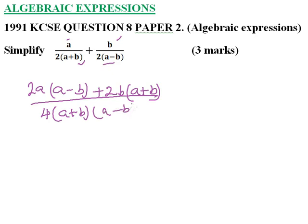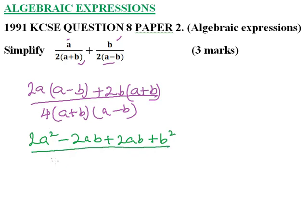And we have our denominator. We multiply, so we have 4 into bracket a plus b and a minus b. When we open the brackets here, you have 2a squared. 2a multiplied by b we have minus 2ab. We have 2b times a, we have plus 2ab. And 2b times b we have plus b squared.